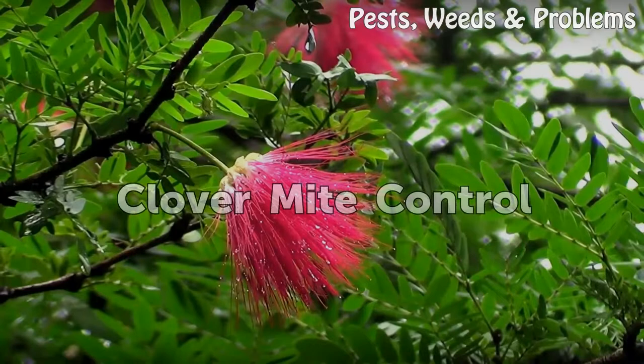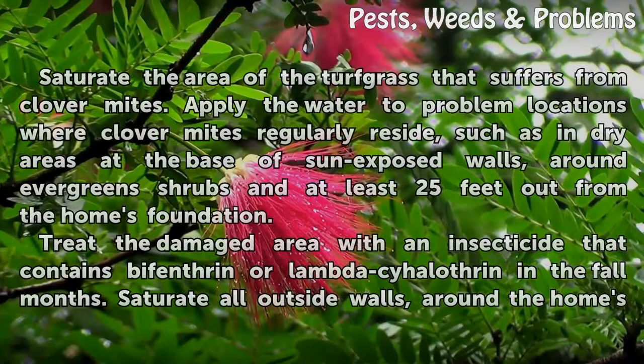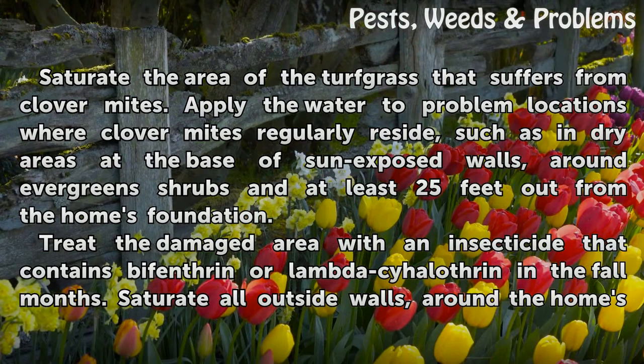Clover mite control. Saturate the area of the turf grass that suffers from clover mites. Apply the water to problem locations where clover mites regularly reside, such as in dry areas at the base of sun-exposed walls, around evergreen shrubs, and at least 25 feet out from the home's foundation.